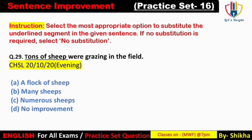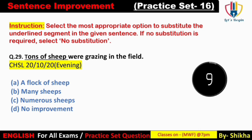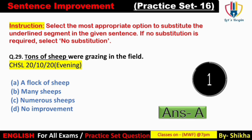Next: 'Tons of ship war grazing in the field.' 'Sheep' ke saath 'tons' ka use nahi hota — sheep ke group ko kaha jata hai 'flock.' Answer: 'A flock of sheep were grazing in the field.' Option B 'many ships' — 'sheep' ka plural 'ships' nahi hota; 'sheep' singular aur plural dono forms mein same rahta hai. Isi liye option B aur C galat ho jayenge.